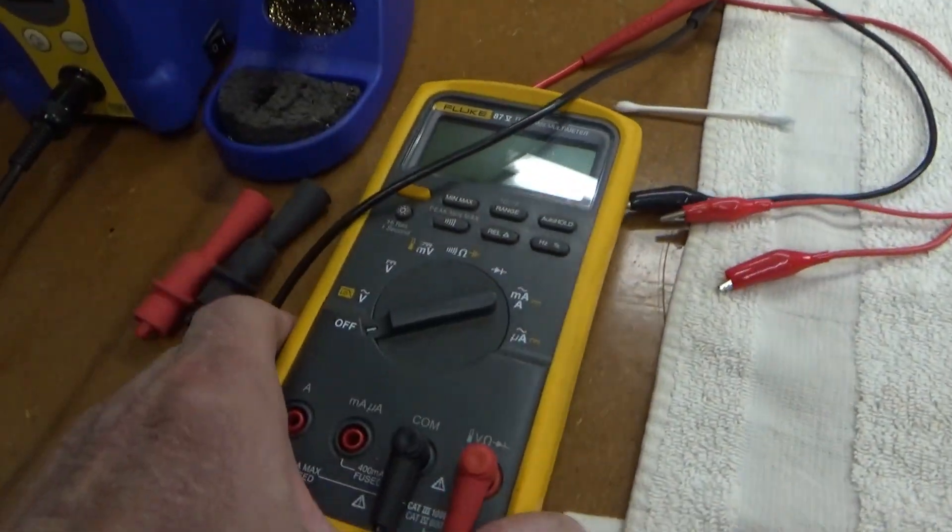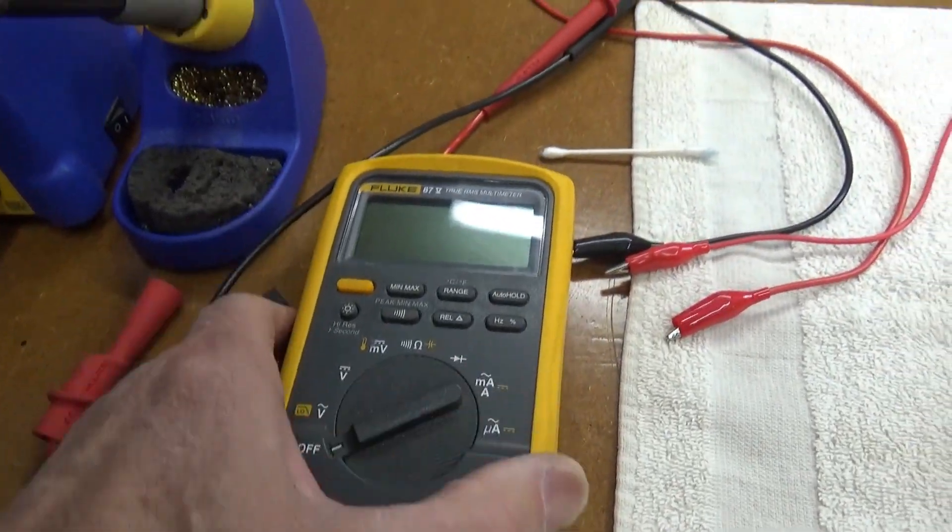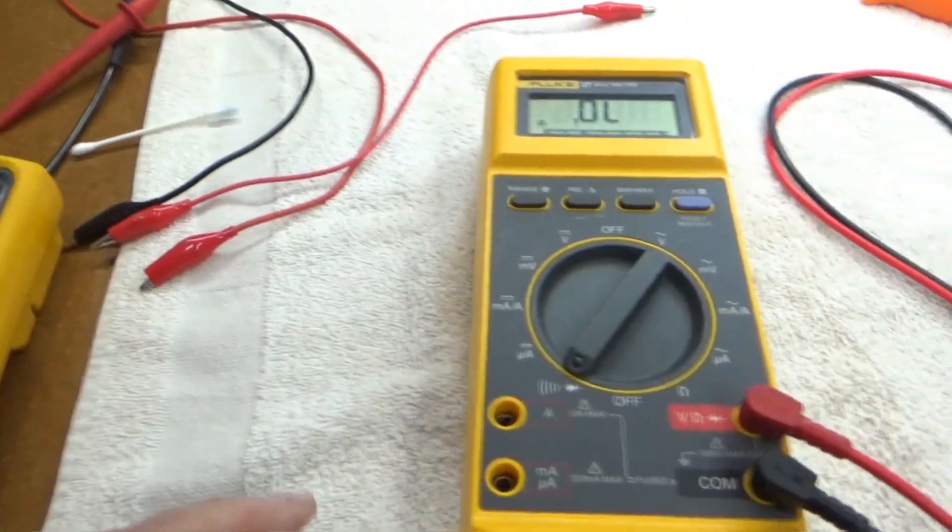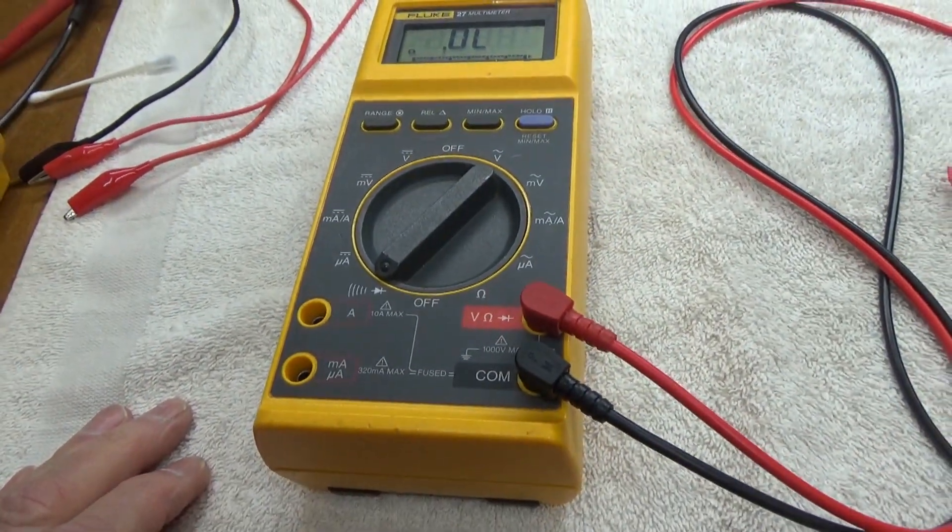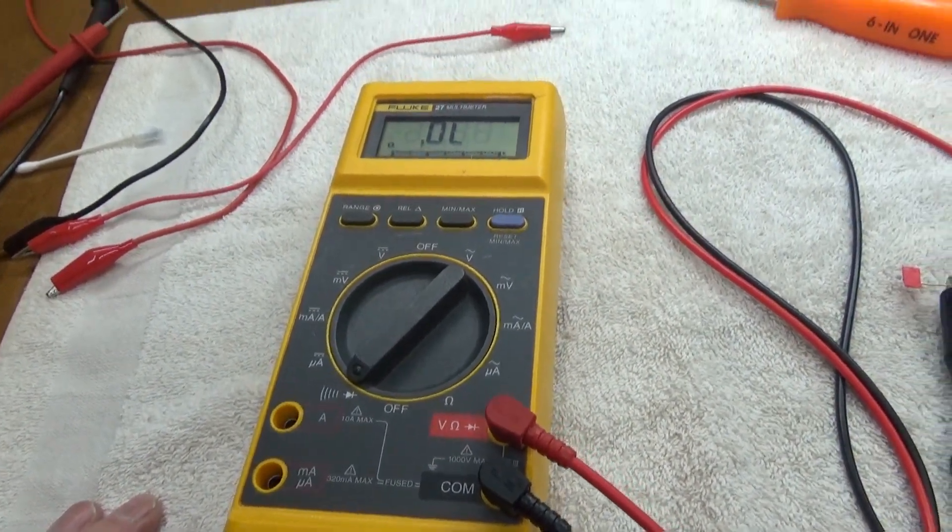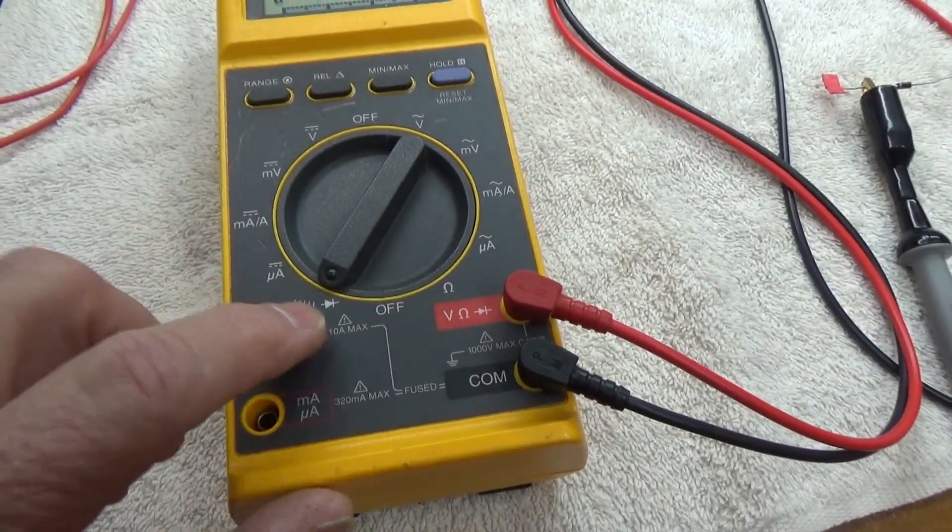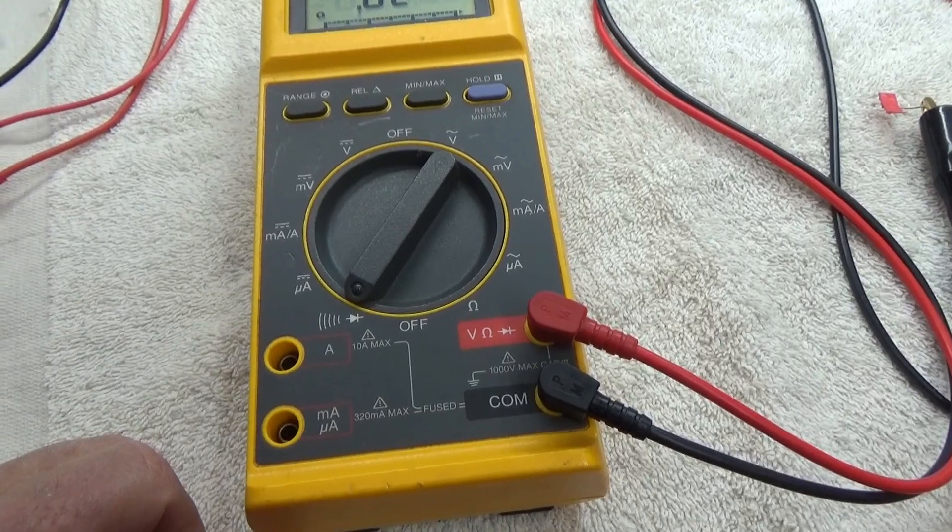Everything else seems to work just fine, all the other ranges. So if I want to do diode test or continuity test, I'll just use my 87 and call it good on this. This is kind of just my backup meter, so I'll just remember that that's a little iffy there.